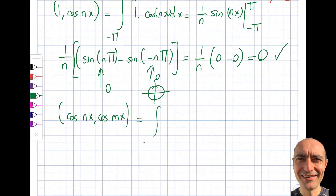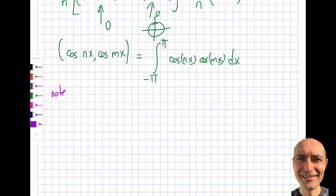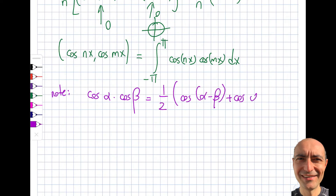I want you to memorize this identity because we will see it a lot in Fourier transforms. Cosine of alpha times cosine of beta equals one-half times cosine of alpha minus beta plus cosine of alpha plus beta. You may recall this when alpha equals beta: cosine squared x equals one-half times (1 plus cosine 2x). This is a more generalized version of that formula.